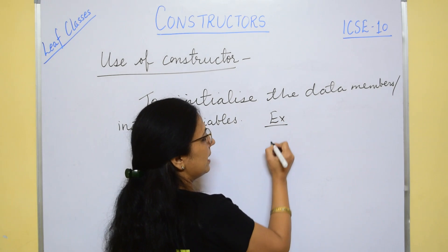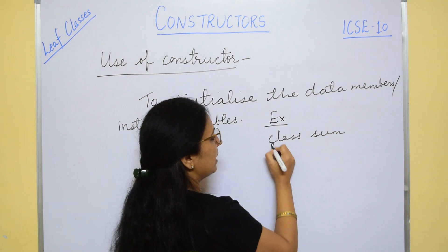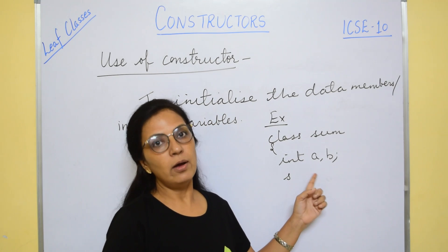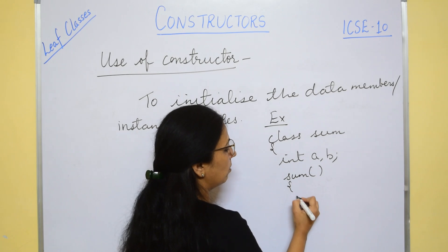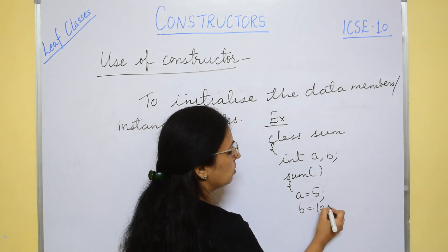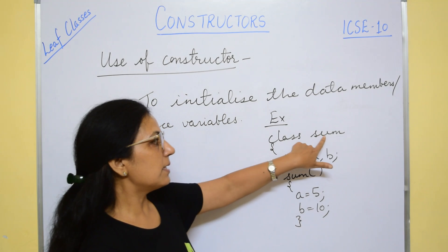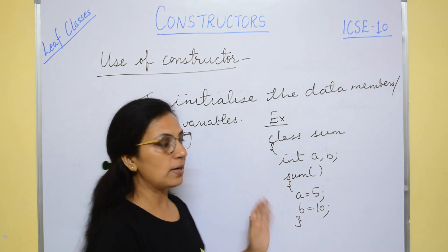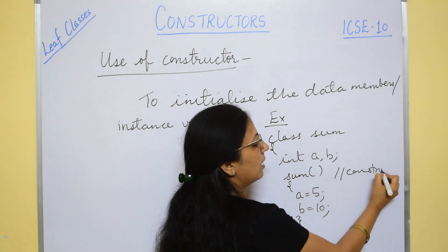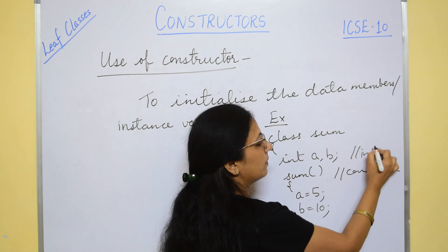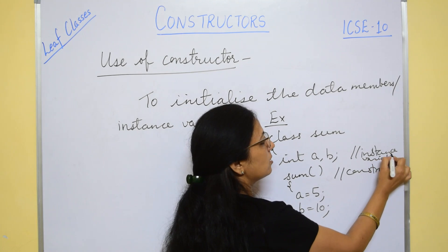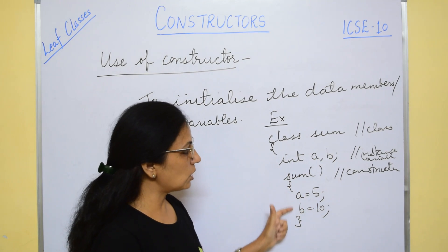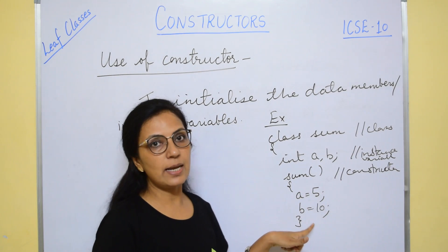Let us take one example. Suppose I have a class 'sum' with two instance variables a and b. I want to initialize these two variables with values depending upon the question — say a equals 5 and b equals 10. This function has the same name as the class and here we are not writing any return type, not even void. So this is a constructor. These are the instance variables and this is your class.